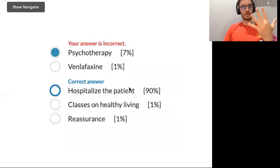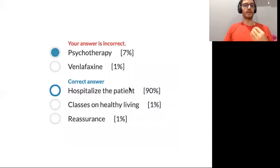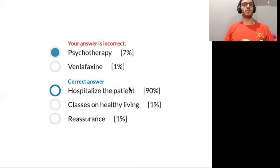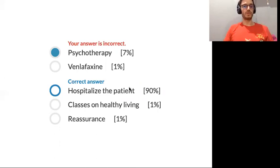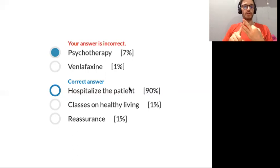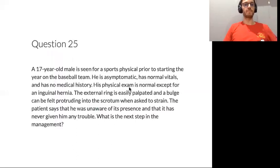My answer was psychotherapy, which is incorrect. This patient needs hospitalization to correct her metabolic derangements. She can undergo psychotherapy, venlafaxine, and other options while hospitalized. Clues USMLE will give for severe anorexia nervosa: amenorrhea, low BMI less than 15, metabolic derangements, and poor insight. She has several of these, so you must hospitalize her.